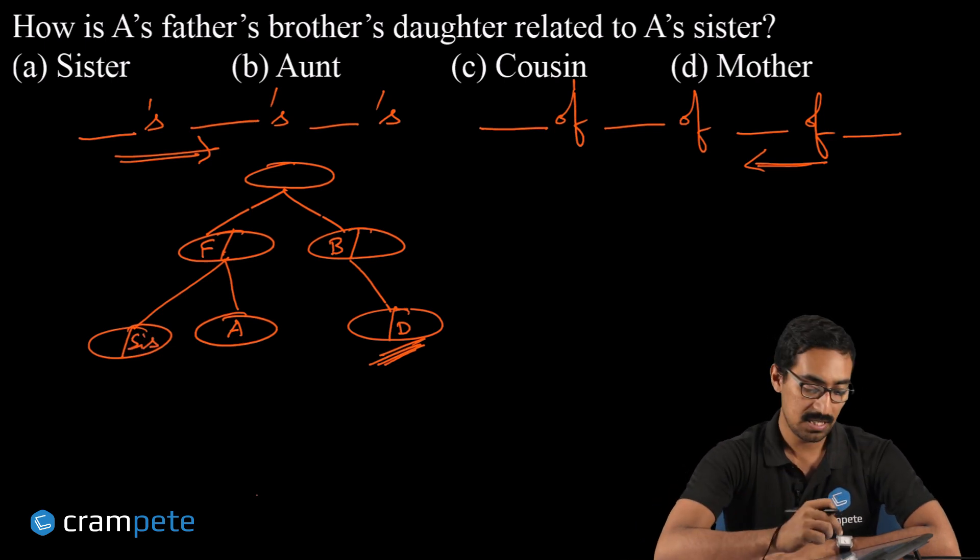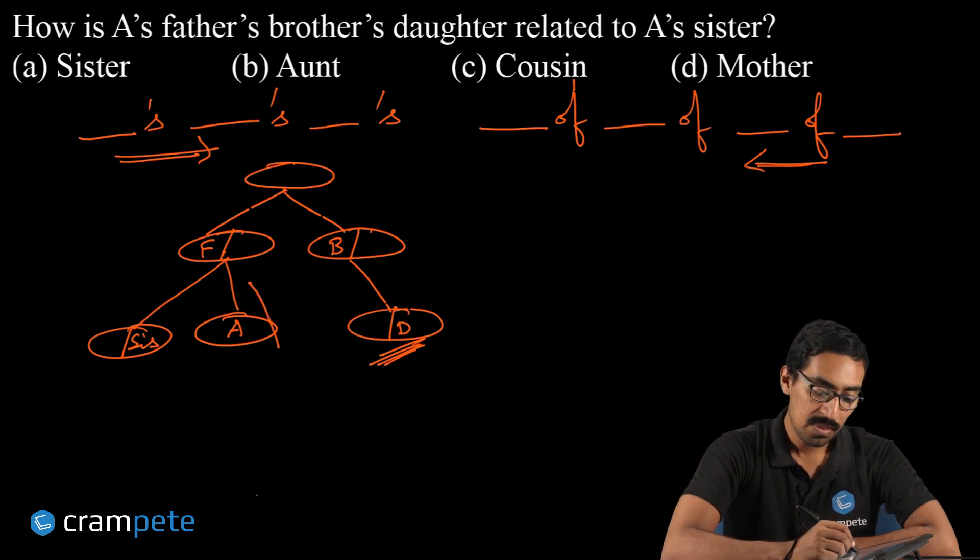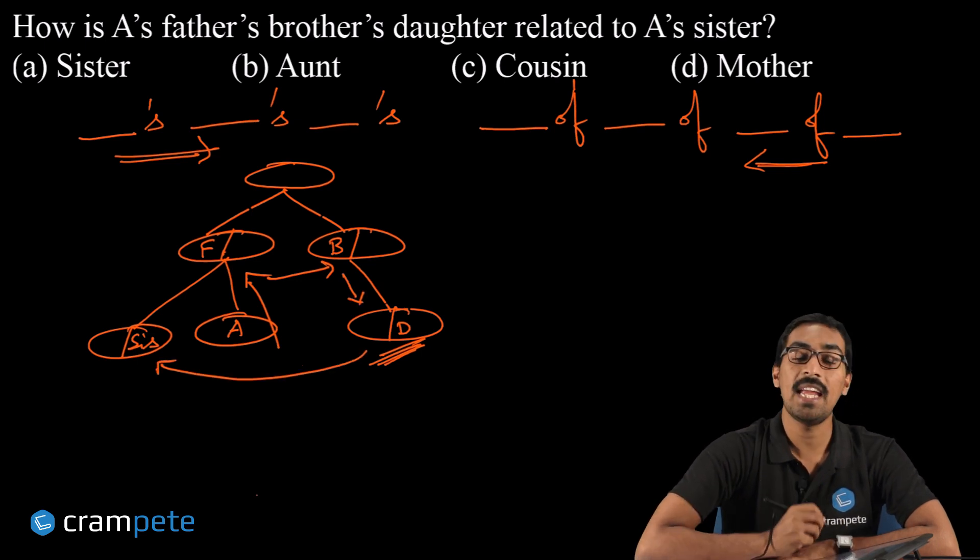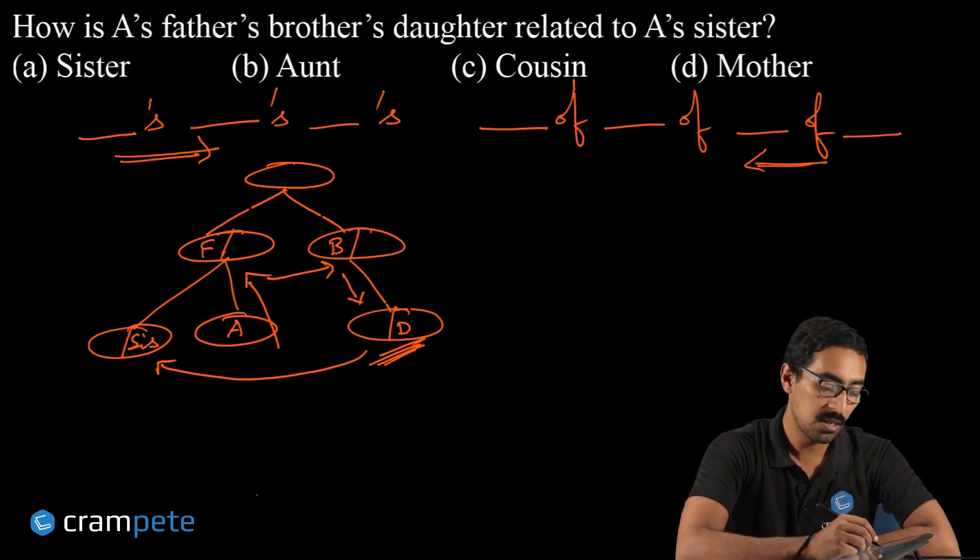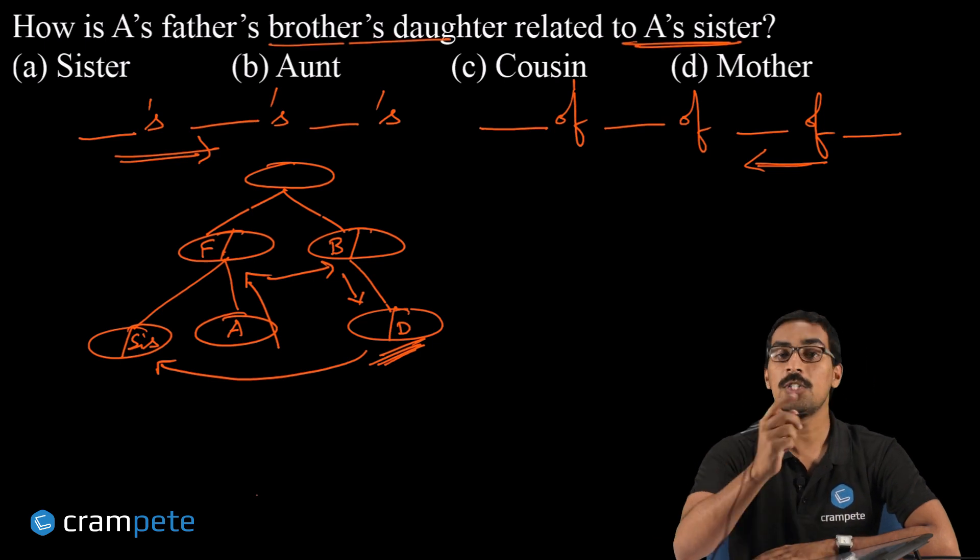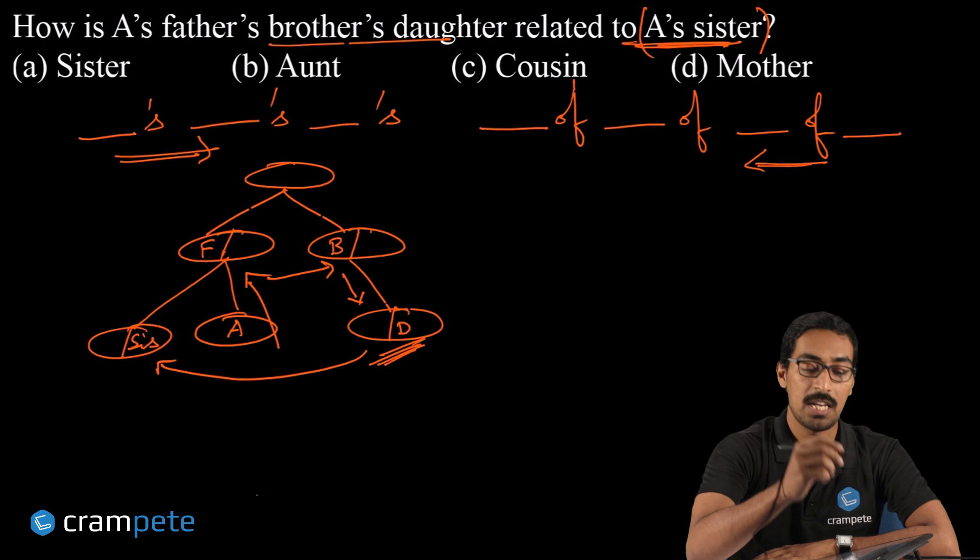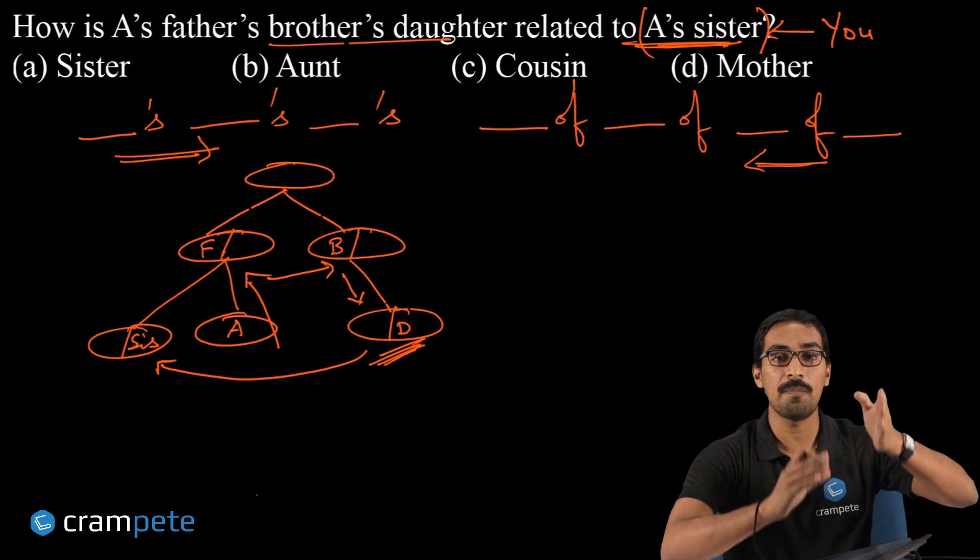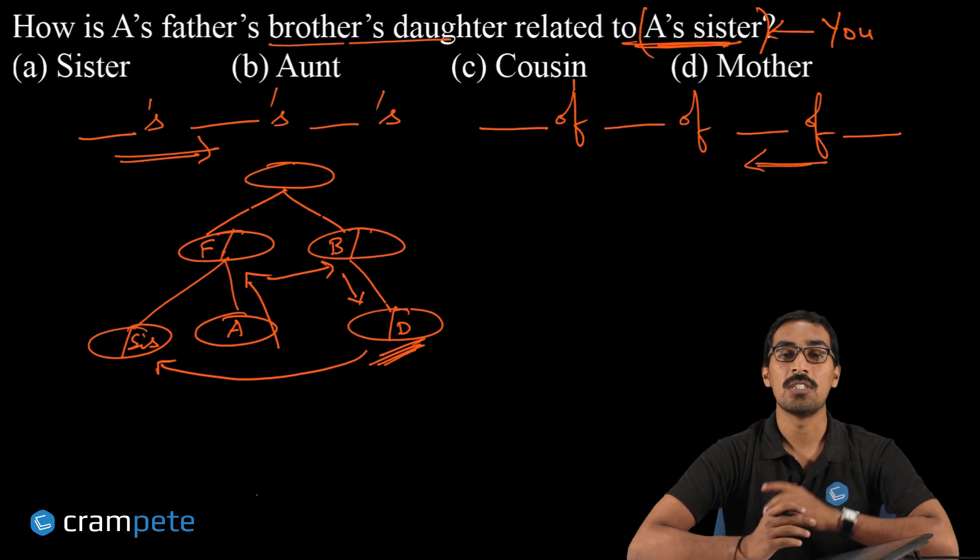Now see the question: How is A's father's brother's daughter related to A's sister? So whenever there is a question, how is someone related to someone else, whose perspective should you be? Yes, after the word 'to,' immediately after the word 'to,' whatever is mentioned, imagine you are that person. Irrespective of the gender, just consider yourself being that person. Put yourself in that person's place and look at the other person.